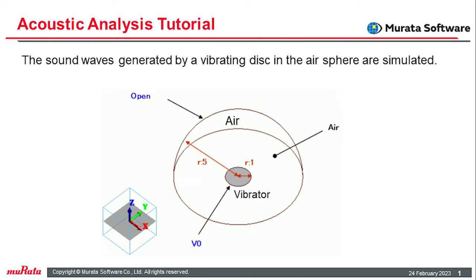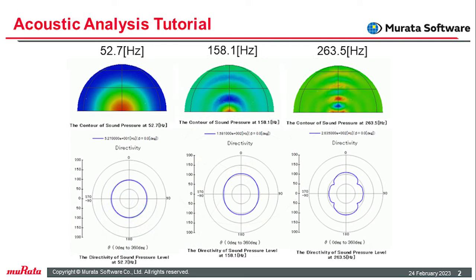The air hemisphere is created from a solid body. The open boundary is set on the surface of the hemisphere. A circular sheet body is defined for imprinting. The velocity boundary condition is applied. From the analysis results, we can see how the sound pressure distribution generated by the vibrator changes as the frequency increases, and how the directivity of the sound pressure changes.